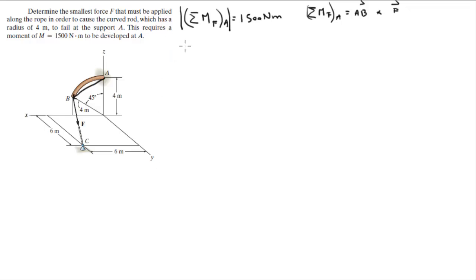So first let's find all the points involved. We got point A which sits at 0i plus 0j plus 4k. We got B which has an x component, a y component and a z component. The y component is obviously 0, the x component sits at 4 sine of 45 and the z component sits at 4 cosine of 45. Sine of 45 and cosine of 45 are the same.